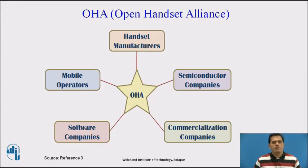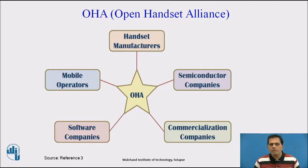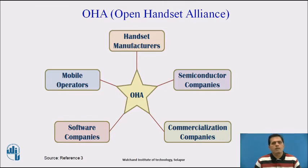Talking about the Open Handset Alliance, the diagram shows hardware manufacturers, mobile developers, commercialization developers, and semiconductor companies — all an alliance of approximately 30 organizations committed to bringing a better and open mobile phone to the market. Android was built from the ground up and has been available as open source since October 2008. Google opened the entire source code under an Apache license, with which vendors are free to add proprietary extensions without submitting those back to the open source community.